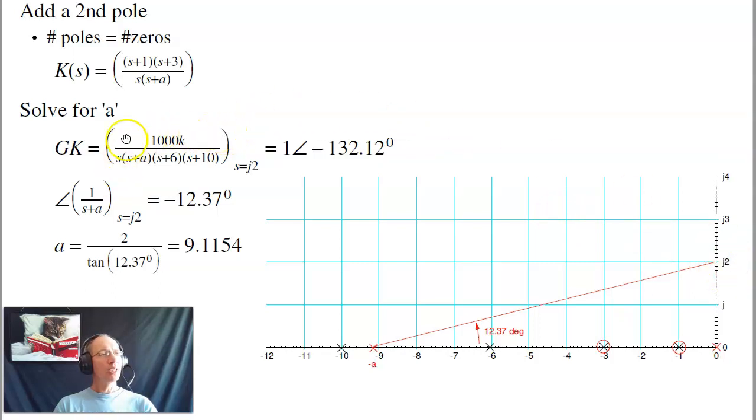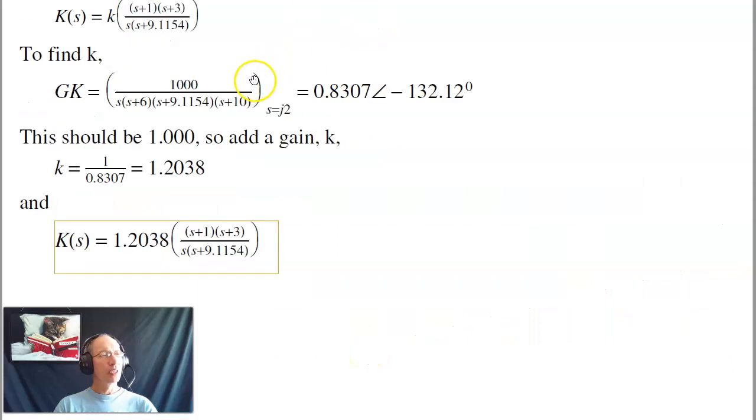If I add two zeros, I need to add two poles. So one pole goes to the origin. The other one, I don't know where it goes. It's wherever it takes to make the phase add up. And by add up, it means at two radians per second, the phase should be minus 132 degrees. So you take the phase of everything that you know, and I'm off by 12 degrees. So that means that the phase shift of 1 over s plus a must be minus 12 degrees. So a then, using some trigonometry, is 2 over the tangent of 12 degrees, gives you 9.11.